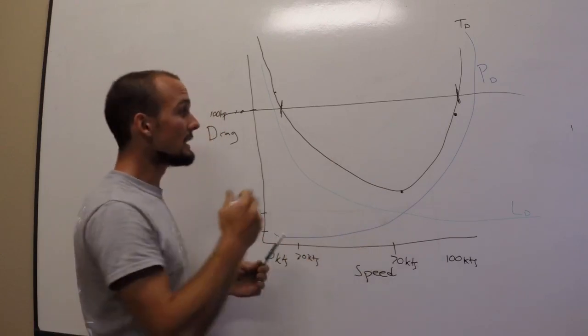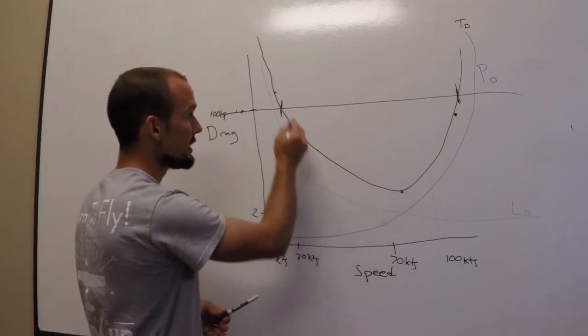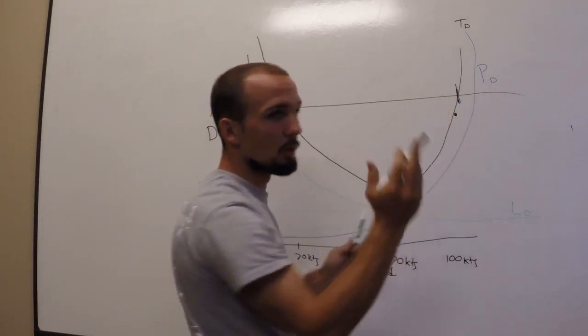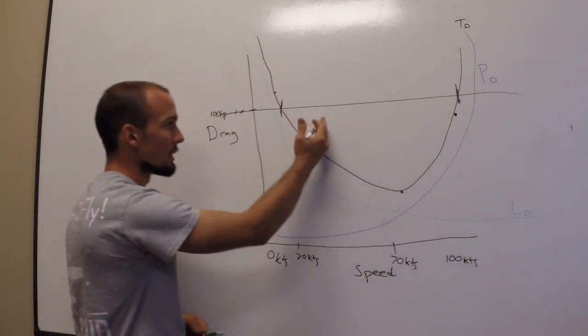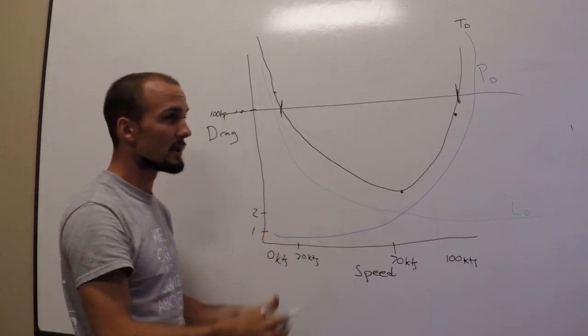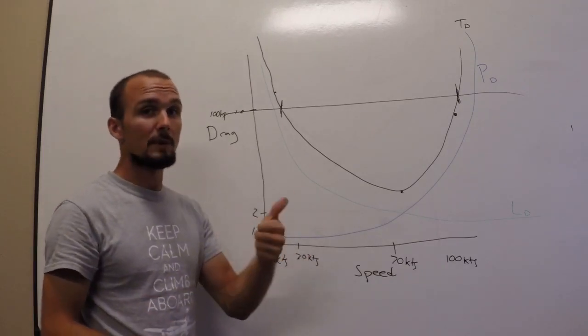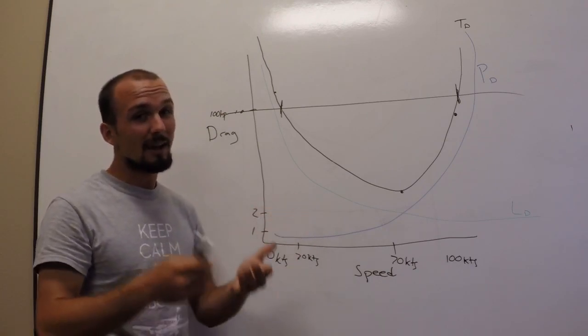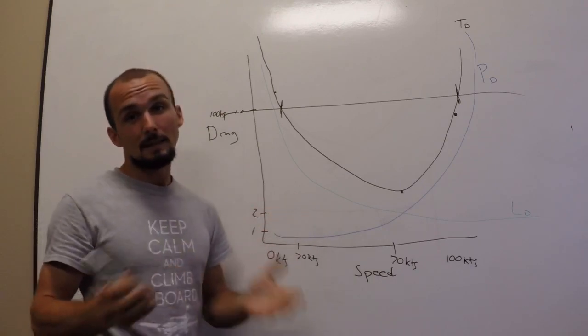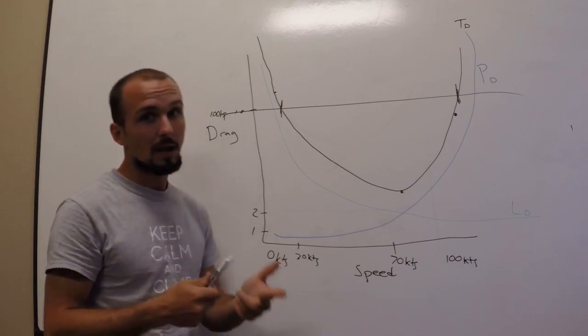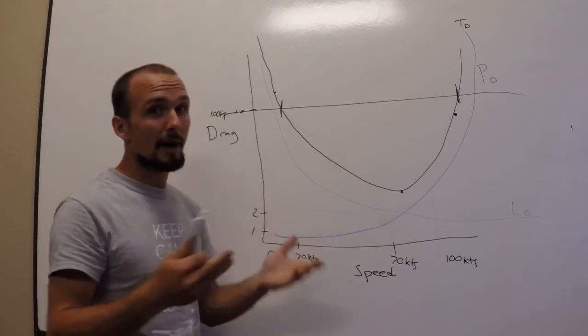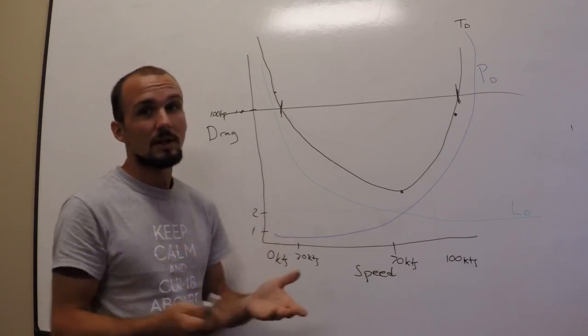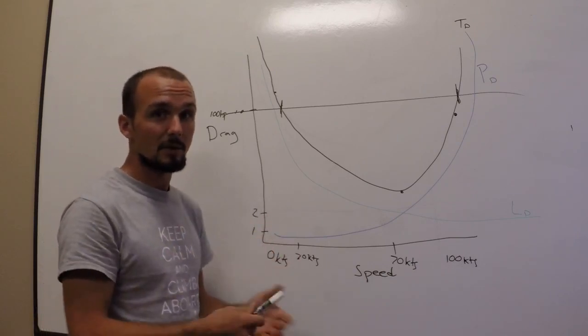So your takeaway here is that slow airspeeds equal high drag, high airspeeds equal high drag, but the more dangerous of the two would be those slow airspeeds, because slow airspeeds, you don't have a whole lot of options. Remember, you can always trade airspeed for altitude. You can trade your altitude for airspeed. If you don't have either one of those, you're in deep trouble. So make sure you either have altitude or you have airspeed.